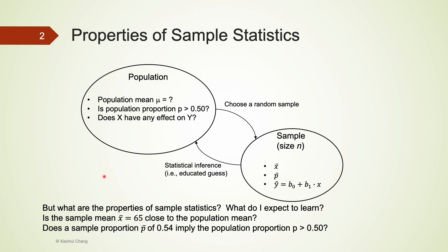You may remember from one of the earlier videos that samples are very important to understand populations. I have drawn two circles on this slide. The bigger circle refers to a population, while the smaller circle represents a sample drawn from this population. Many times, we try to answer questions regarding population parameters. For example, what's the average American income? That's the population mean mu. Or, is the car ownership in America more than 50%? That's the population proportion greater than 50%. To answer these questions, we try to draw a random sample from this population and look at the corresponding sample statistics instead — the sample mean x-bar and sample proportion p-bar.